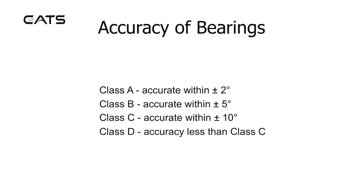When requesting a QDM, the accuracy of the bearing is class A, which is accurate within plus or minus 2 degrees; class B, which is accurate within plus or minus 5 degrees; class C, which is accurate within plus or minus 10 degrees; or class D, which is accuracy less than class C.